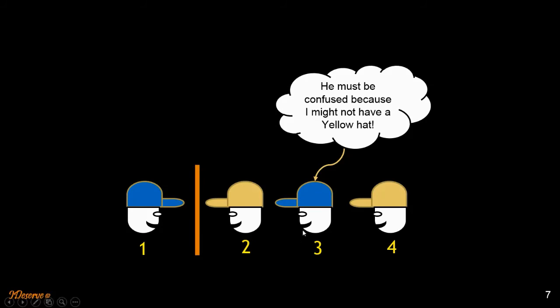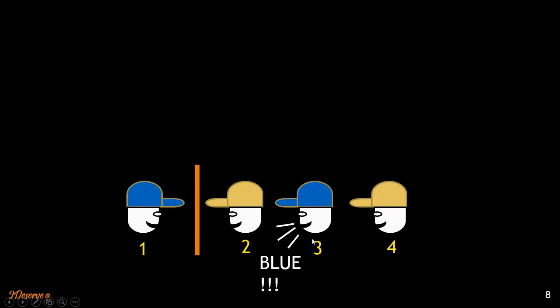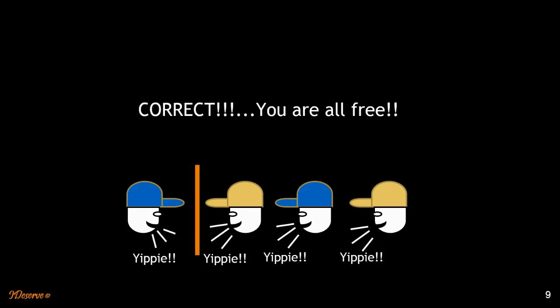That means prisoner three will be the first guy to shout out, he has a blue cap. That is the answer to this puzzle. So he shouts out blue, the answer is correct, everyone is happy and all of them are free.